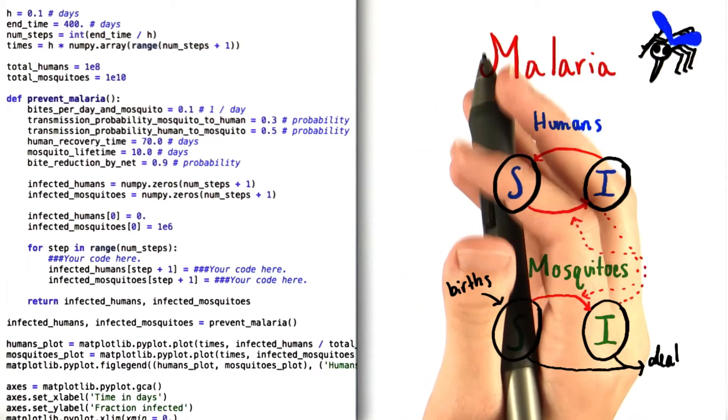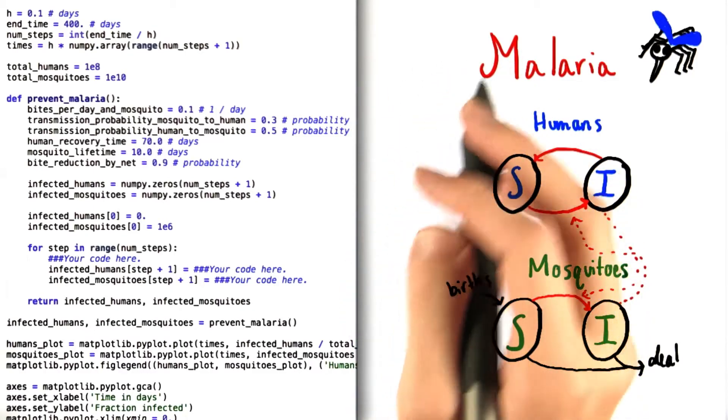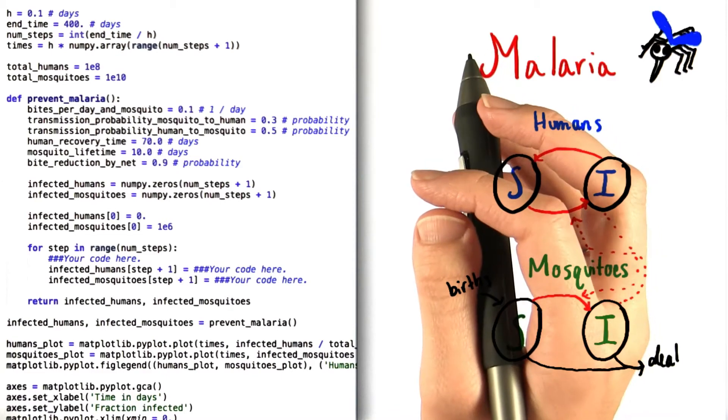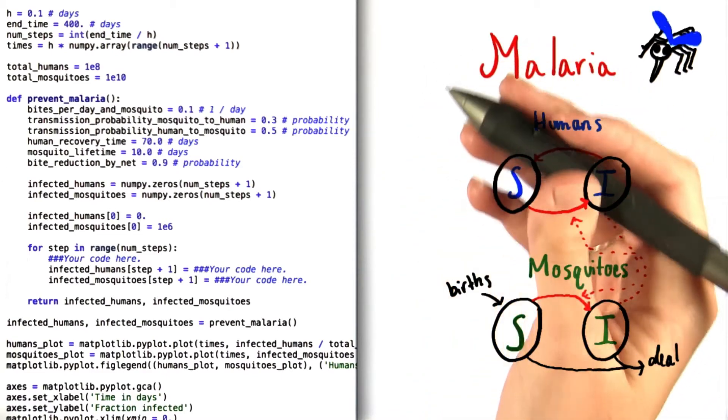For the last problem of unit 3, we find a population faced with a malaria epidemic, which is definitely very scary for everyone involved. Luckily, we're here to help them out.